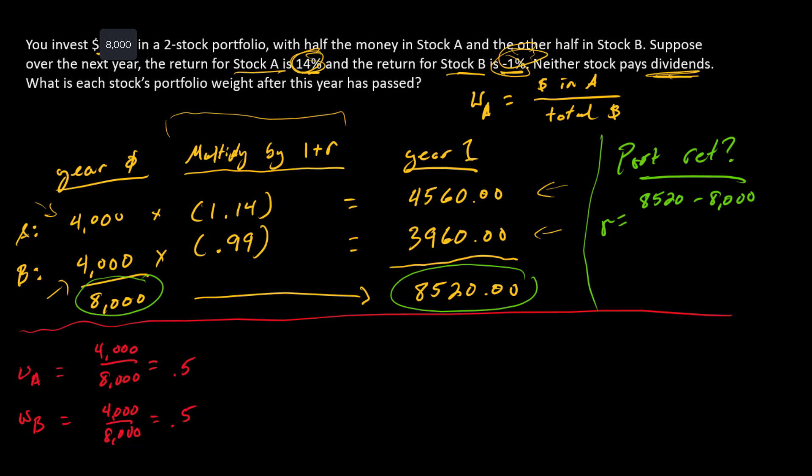So r equals the value at the end minus the value at the beginning. If there were any dividends, we'd add those in as well, but there aren't, so we've just got the change in total price, and we'll scale that by $8,000.